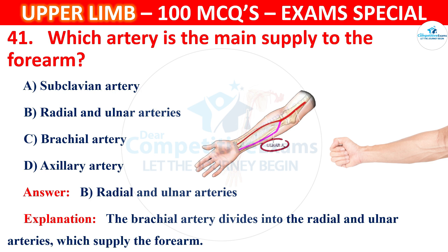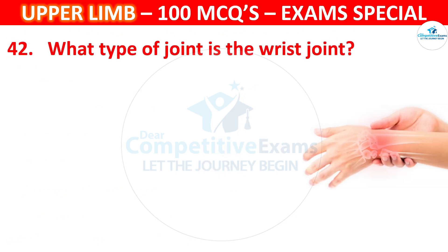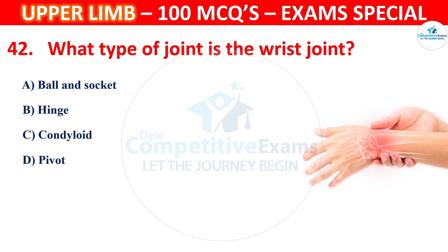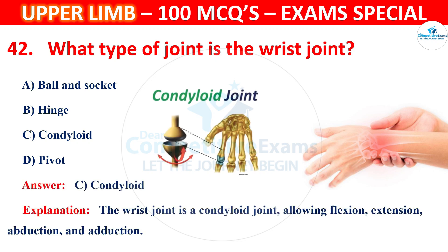Question number 42: What type of joint is the wrist joint? Options: ball and socket, hinge, condyloid, or pivot. The correct answer is C, condyloid. The wrist joint is a condyloid joint allowing flexion, extension, abduction, and adduction.